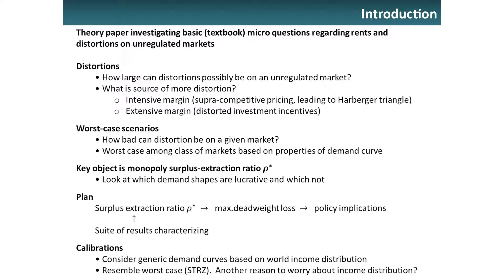Some questions are: how large can distortions be in this commercial market, and what is the source of more distortion? Is it going to be at the intensive margin — the Harberger triangle from pricing — or at the extensive margin? Can the extensive margin be a source of greater distortion? In this case, that means distorted investment incentives, in particular whether or not a firm actually enters that market.